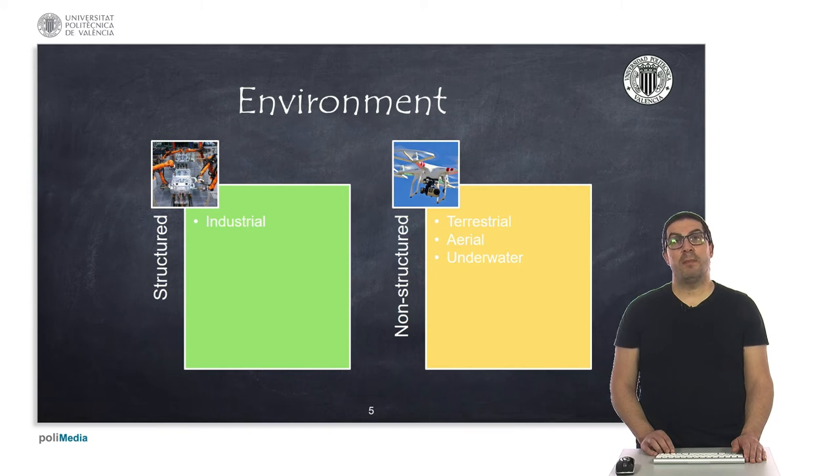Robots can work in multiple environments. Traditionally, we distinguish between structured environments in which all the elements that the robot can interact with are previously known and we have, somehow, a control over them. So the chances for colliding against them is relatively quite low. Industrial environments using robotic arms are a typical structured environment example. On the other hand, when the robot environment is not fully known or it might change, we refer to this situation as unstructured environments.